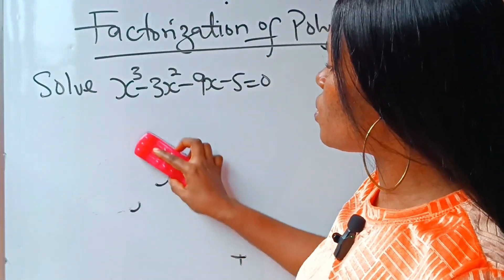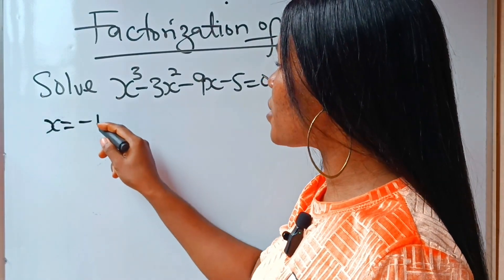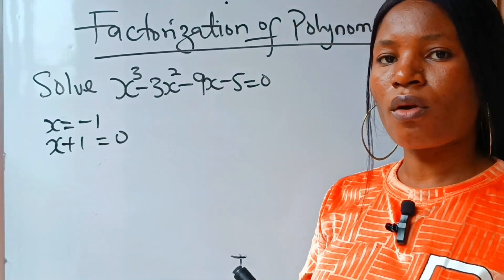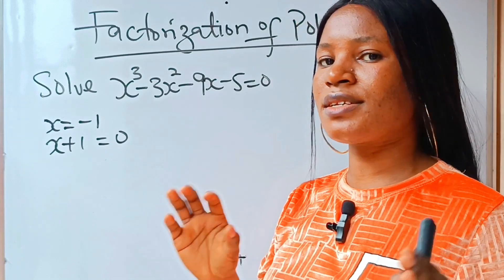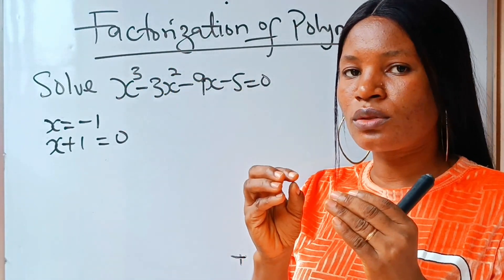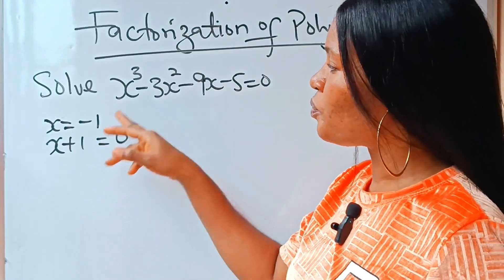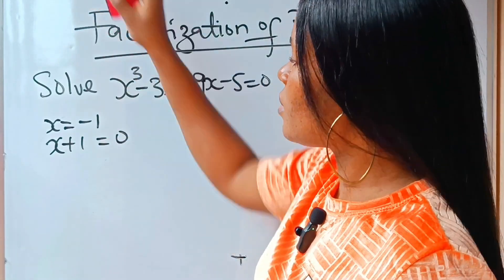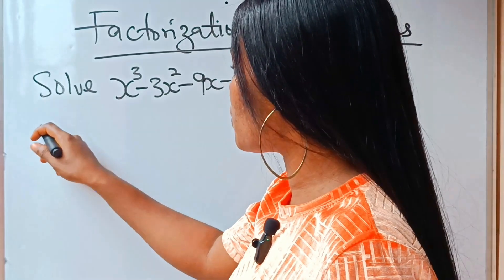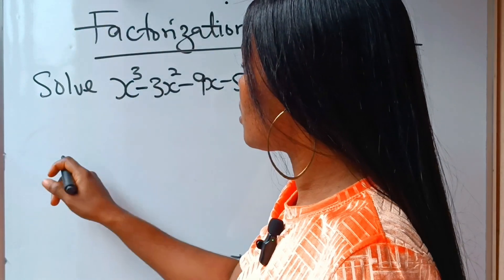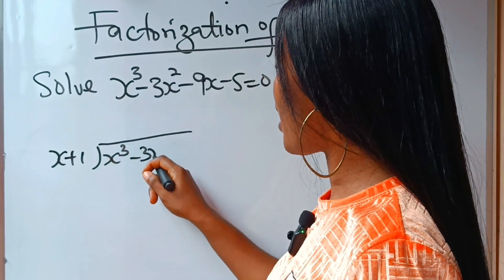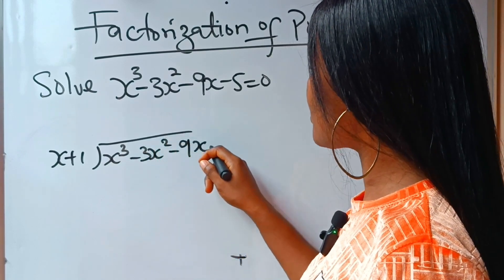So what do you now do? We said x equals minus 1, so that means that x plus 1 is equal to 0. Now, once you've done this, we are going to use this to divide the polynomial so that we'll get a quadratic equation. Let's go ahead and use long division to divide this. Remember, it's x plus 1 equals 0, so we are going to use x plus 1 to divide x to the power of 3 minus 3x squared minus 9x minus 5.